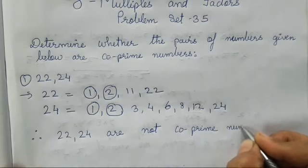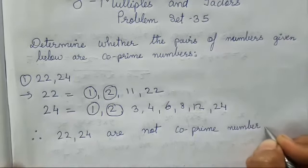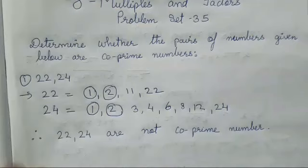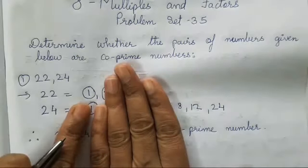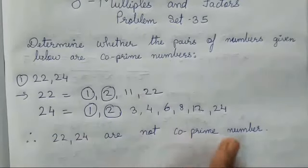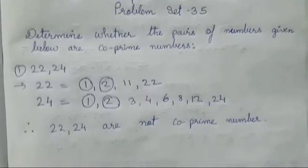22 and 24 are not co-prime numbers. Why they are not co-prime numbers? Because they are having more than one common factor. So if it would have been 1, then it would have been a co-prime number. Got it children?